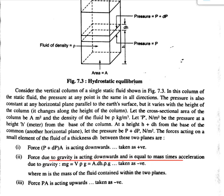The gravity is acting downward and flow and gravity are opposite in direction. Here, flow is from downward to upward and the gravitational force acts downward, so the acceleration due to gravity term is calculated as M times g equals density times volume equals rho times A times dH times g, taken as negative. The force PA is acting upward, taken as negative.